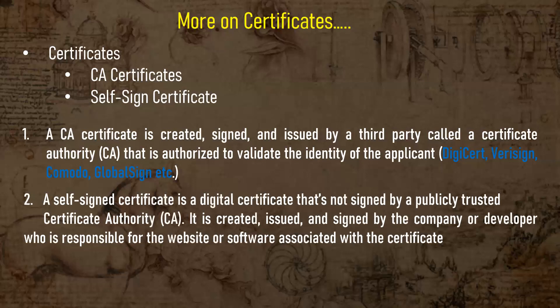A self-signed certificate is a digital certificate not signed by a public trusted certificate authority. It is created, issued, and signed by the company or developer responsible for the website or software. In the development phase, websites go through development, testing, UAT, and pre-production environments before going live in production. Until the application is in development or testing, you can configure the website with a self-signed certificate. Once testing is complete and the website is ready for production, you then buy and configure your application with CA certificates.